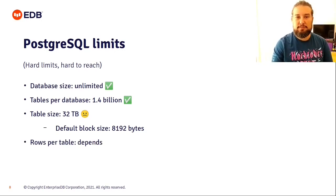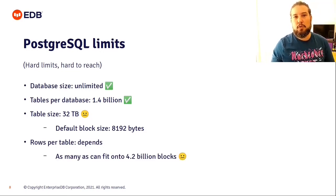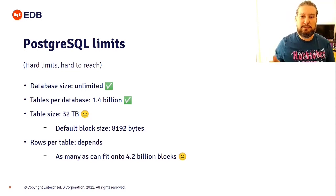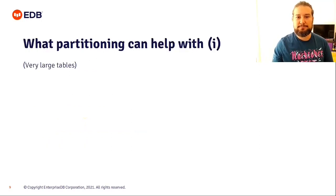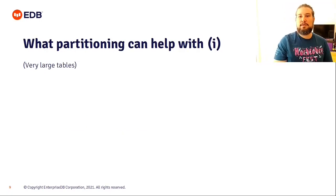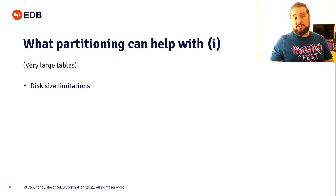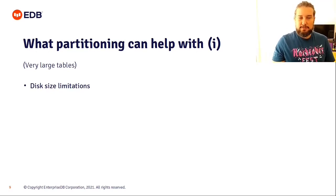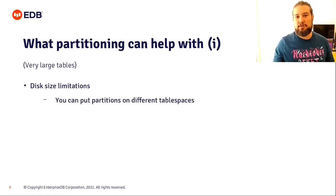How many rows can you have per table? It depends on how big your rows are — roughly as many as you can fit into approximately 4.2 billion blocks. Partitioning can help overcome those limits. If you have very large tables, partitioning can help with disk size limitations. If you have a table that doesn't fit on one disk, you can spread it across multiple disks by partitioning it, putting each partition on a different tablespace — which in Postgres simply means any file system or directory.